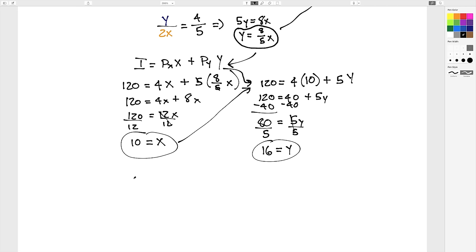So, utility is maximized when John buys 10 beers and 16 hamburgers.